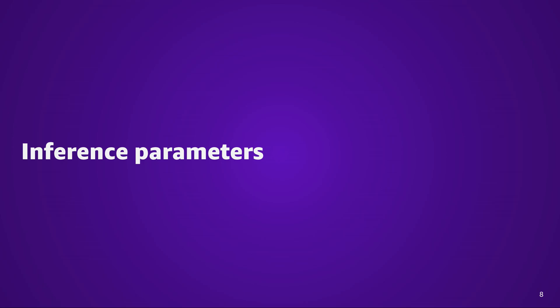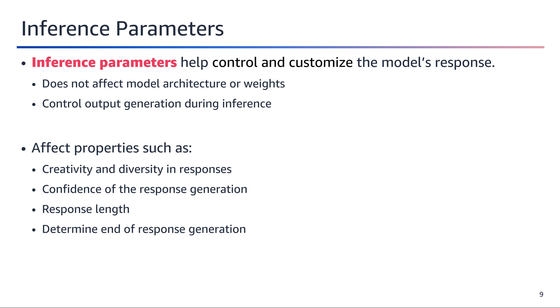Let's move on to inference parameters, an important aspect when working with language models. The choice of inference parameters can significantly impact the model's performance and the quality of generated outputs. Inference parameters help control and customize the model's response during inference or prediction. They do not affect the model architecture or weights, but rather influence the output generation process, impacting aspects such as creativity and diversity in responses, confidence levels, response length, and determining when to end the response generation.